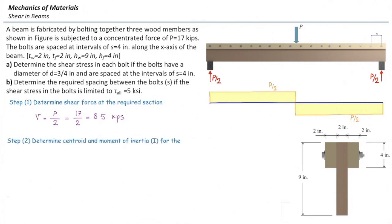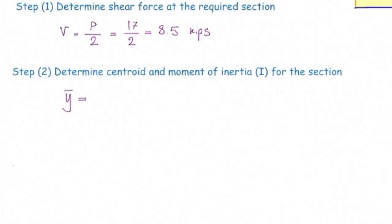In the second step, we determine section properties — meaning the location of the centroid and the moment of inertia. These are calculated using the SecPro app, so to save time I will just write down the values. Y-bar is 3.32 inches from the top surface of the section, and I is 195.8 inches to the fourth power.